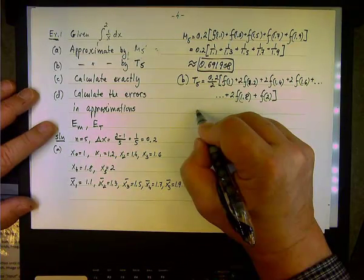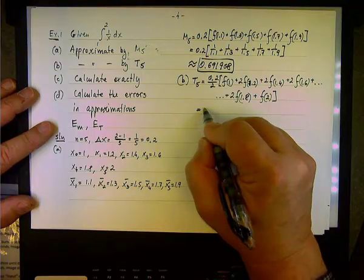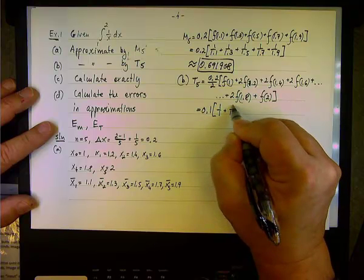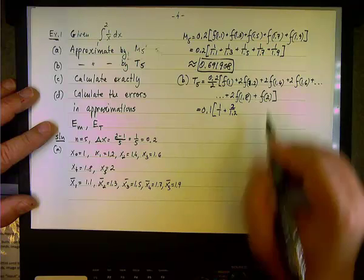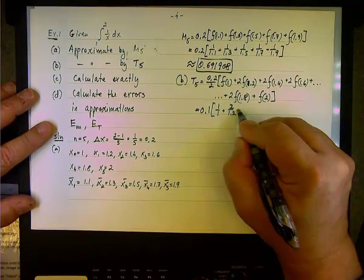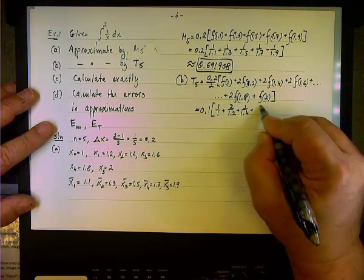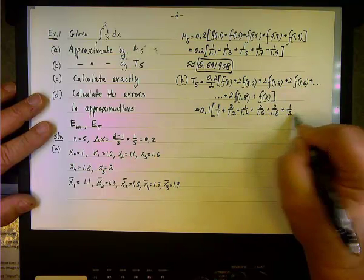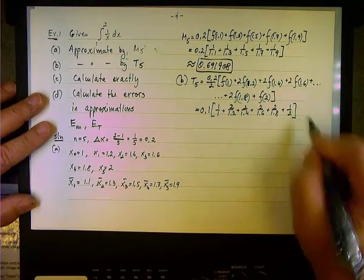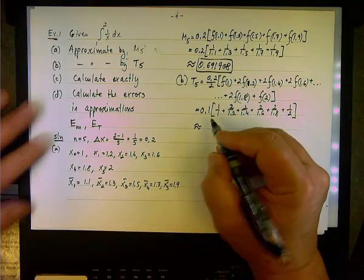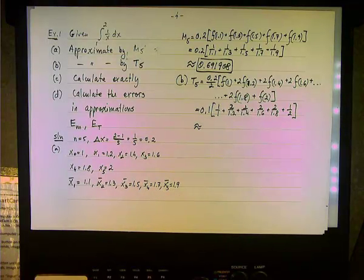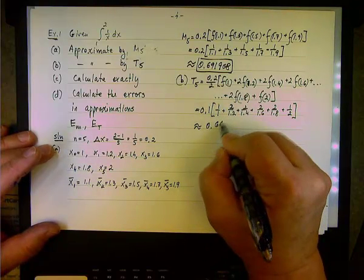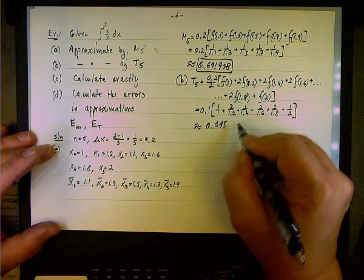So this is pretty much how you do it. 0.2 divided by 2 is 0.1, and now 1 over 1 plus, sorry, 2 over 1, because we multiply by 2, 2 over 1.2, 2 over 1.4, 2 over 1.6, 2 over 1.8, and 1 over 2. So the first and the last. And then you calculate it, and the value is 0.695635.